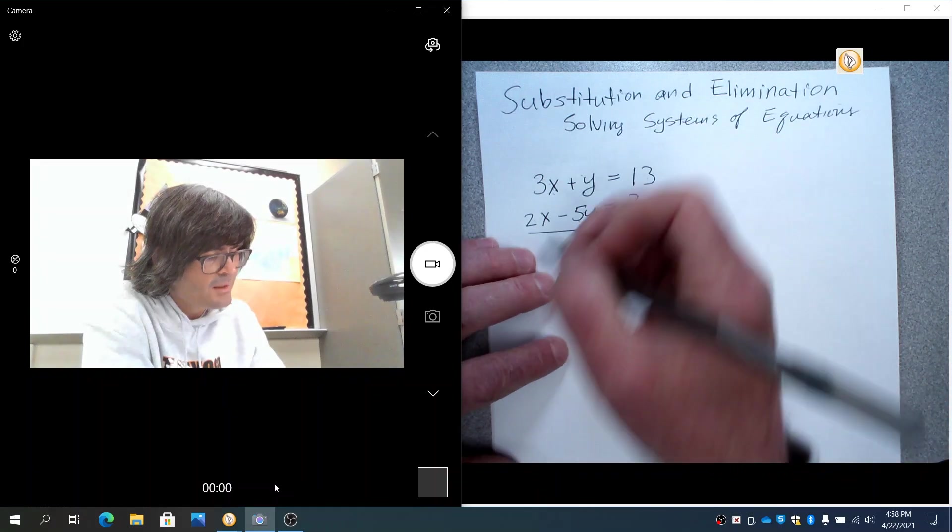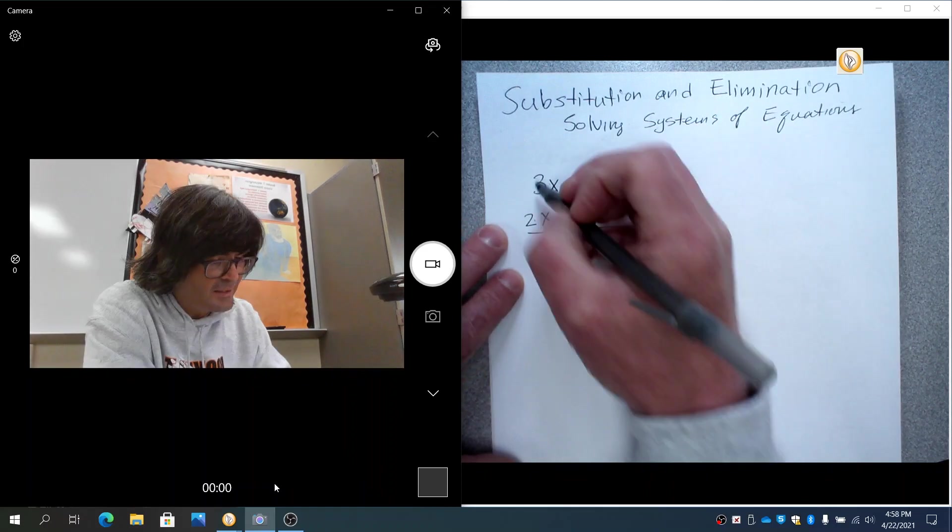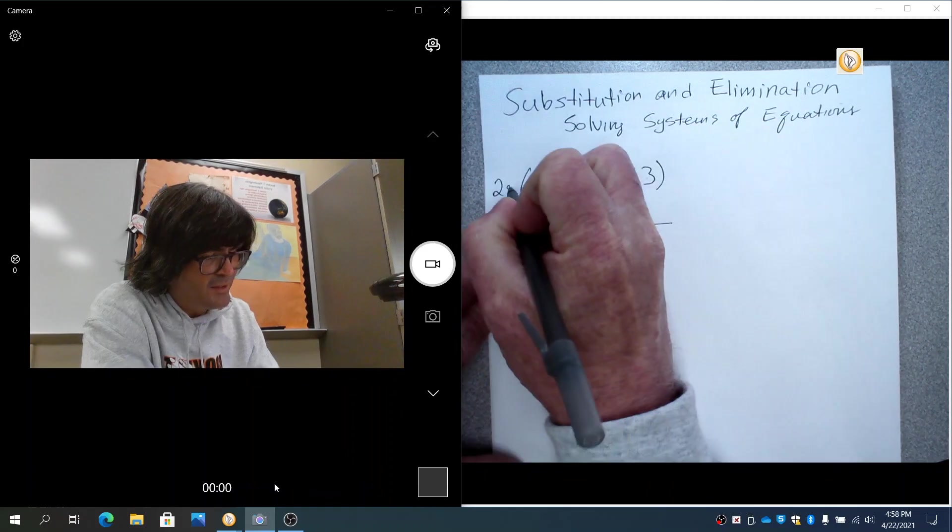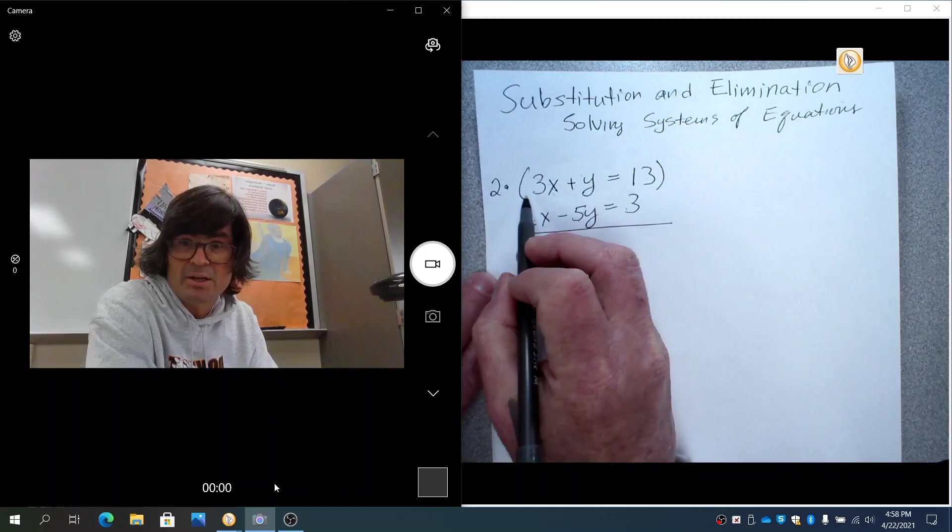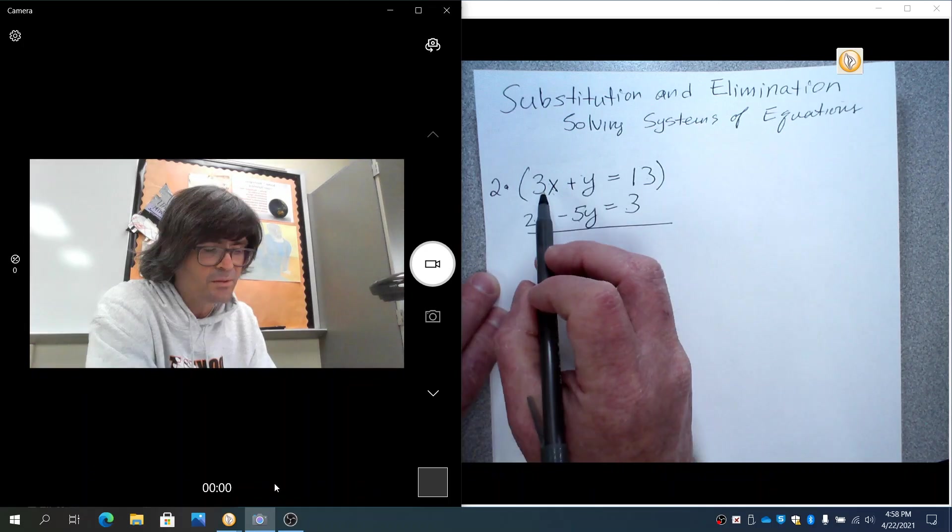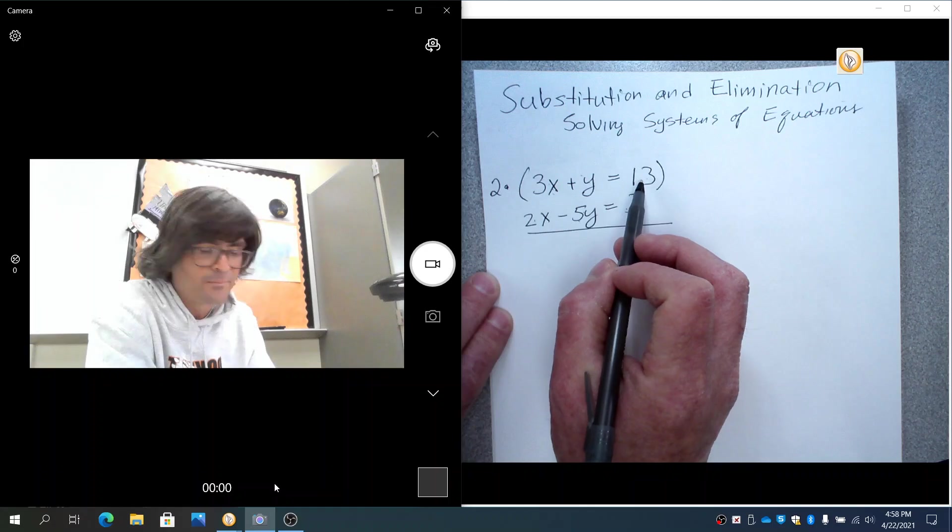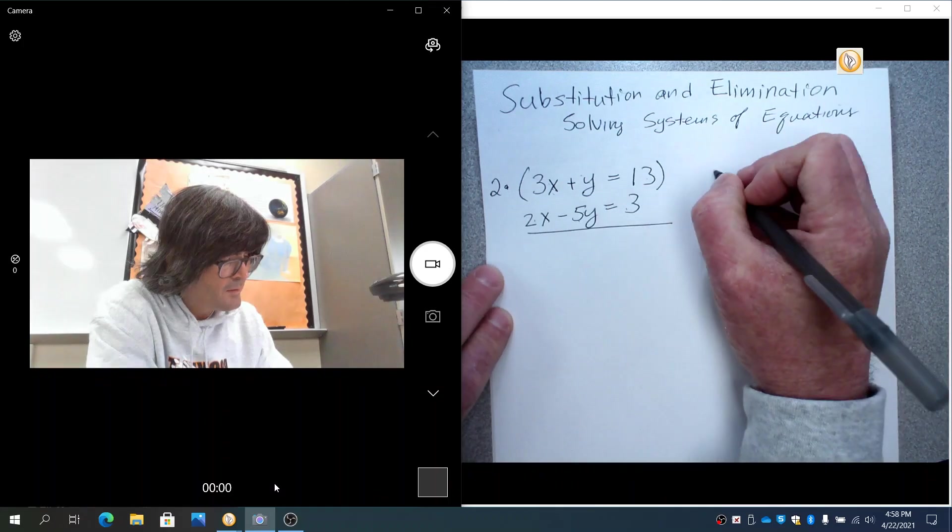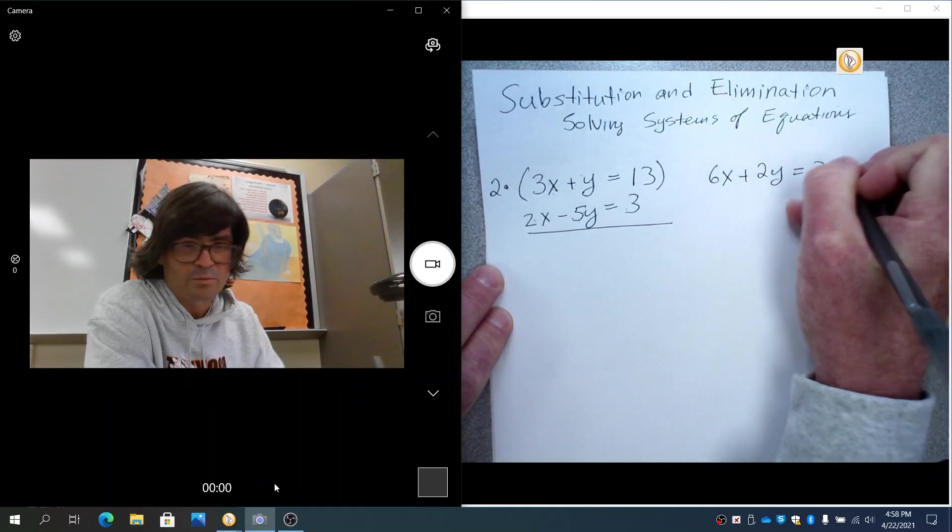And so I'm noticing that if I want to make the x's cancel out, I would like to maybe have this top be a 6x. So I'm going to multiply the whole equation by 2, which is fine because as long as you do it to the left side and the right side, the equation remains the same. So this is going to be 6x plus 2y equals 26.